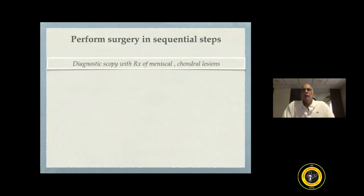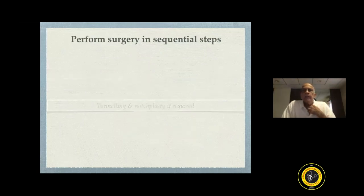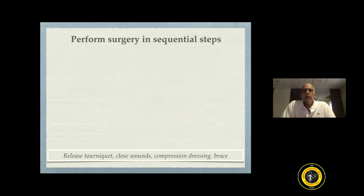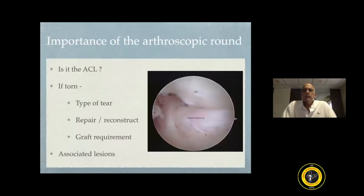Performing surgery in sequential steps helps in many ways — you know that you are not missing out on any of the lesions, and your outcomes can be optimized. The first thing one must do is not rely solely on clinical examination and MRI findings. It is very important to do an arthroscopic round before you harvest the ACL graft. It gives you a lot of information — first of all, you know whether the ACL is responsible for the instability.